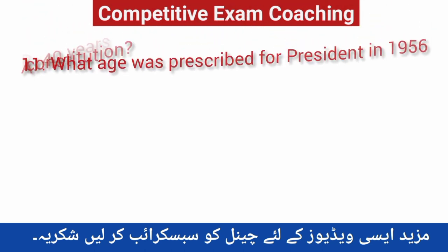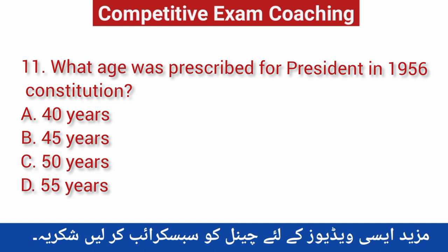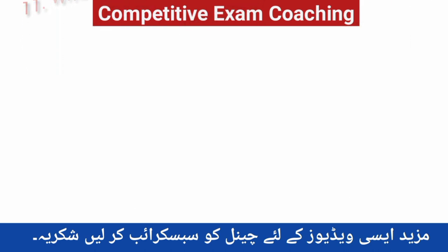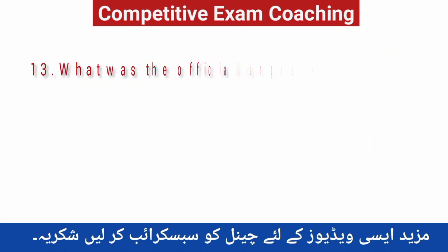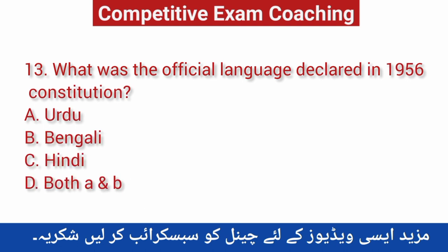Question number eleven: What age was prescribed for the president in the 1956 constitution? Correct answer is A — 40 years. Question number twelve: In respect of religion, what term was set for the president and prime minister in the 1956 constitution? Correct answer is D — he must be a Muslim. Question number thirteen: What was the official language declared in the 1956 constitution? Correct answer is D — Urdu and Bengali, both languages.